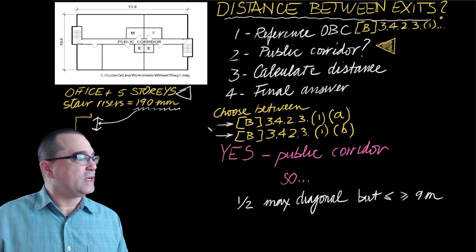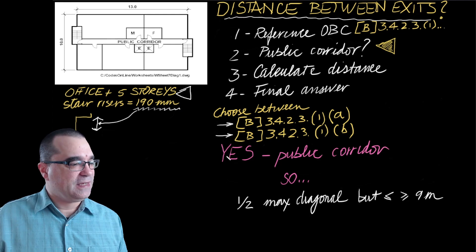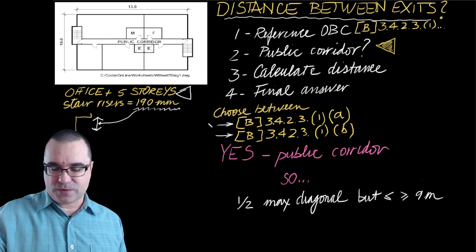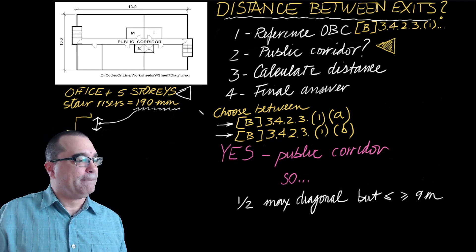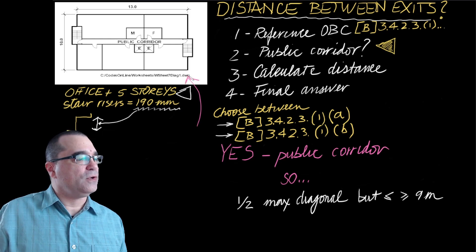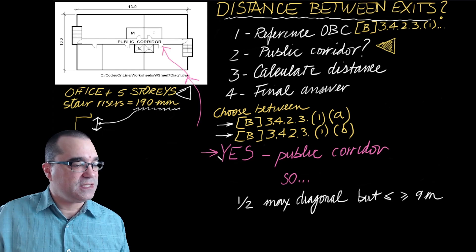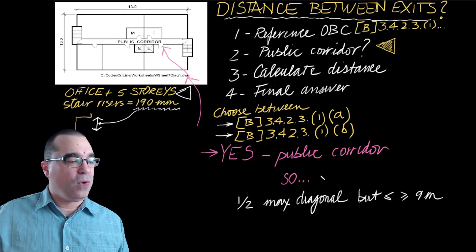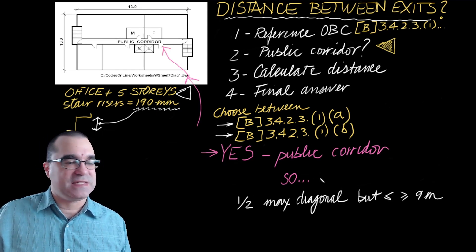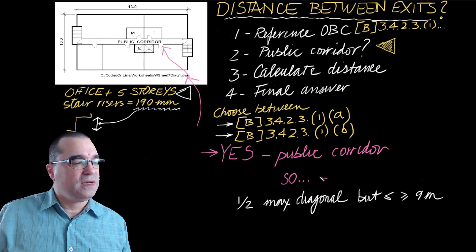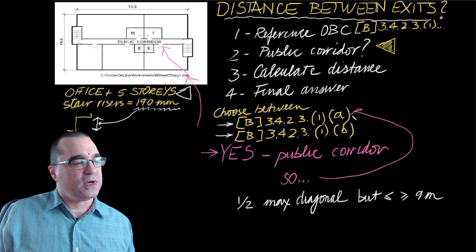If we look at the question right here, you'll notice that there is indeed a public corridor. Yes, there is a public corridor. So what that means is that we have to use this clause right here.